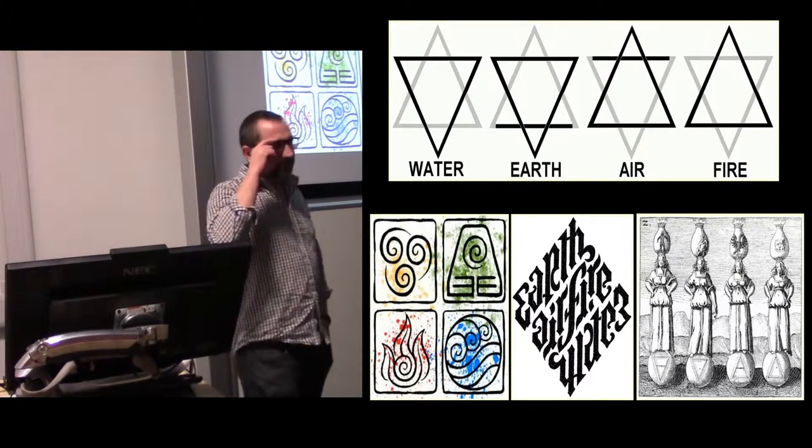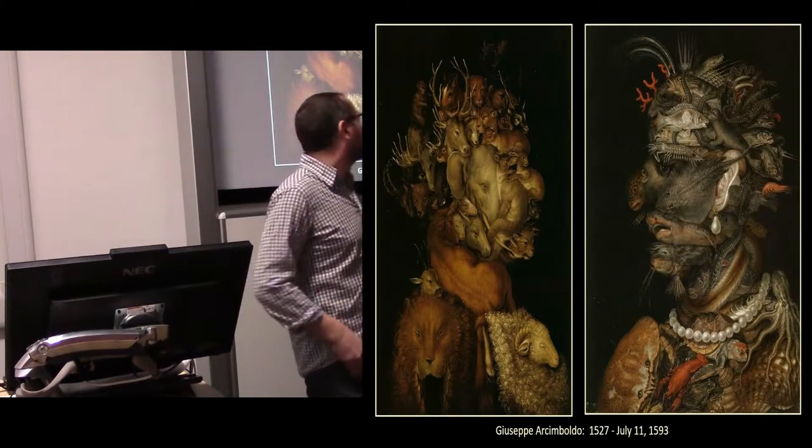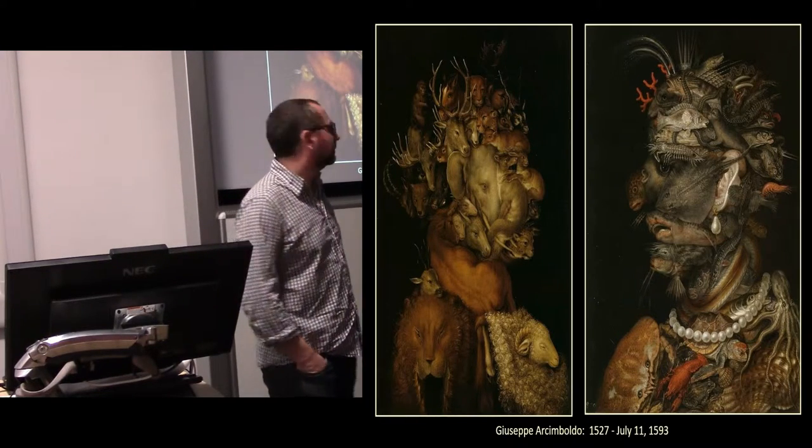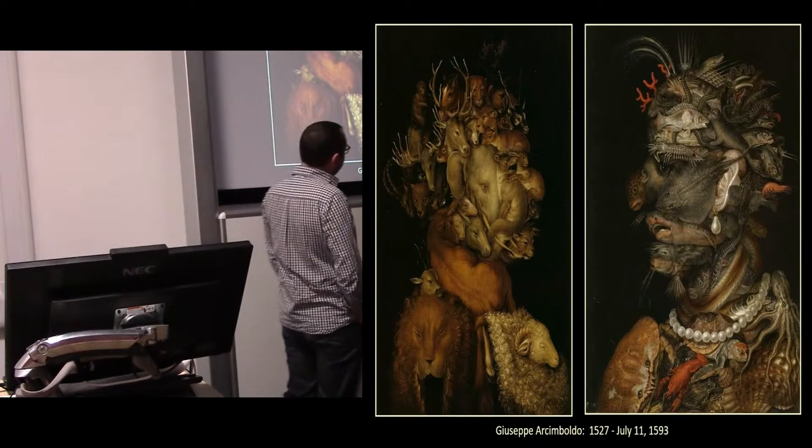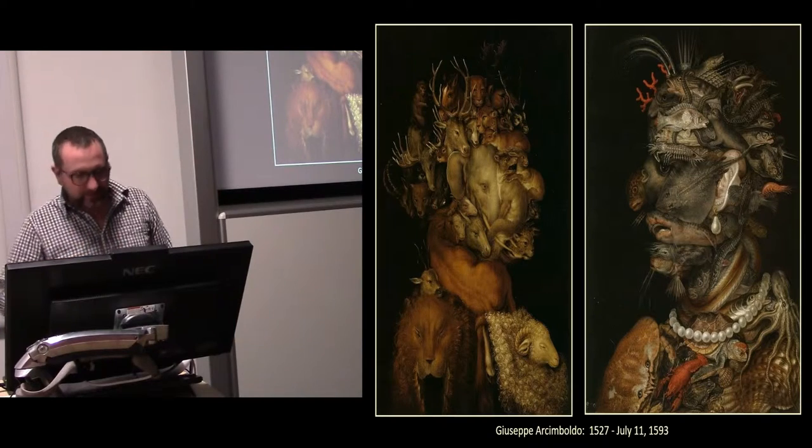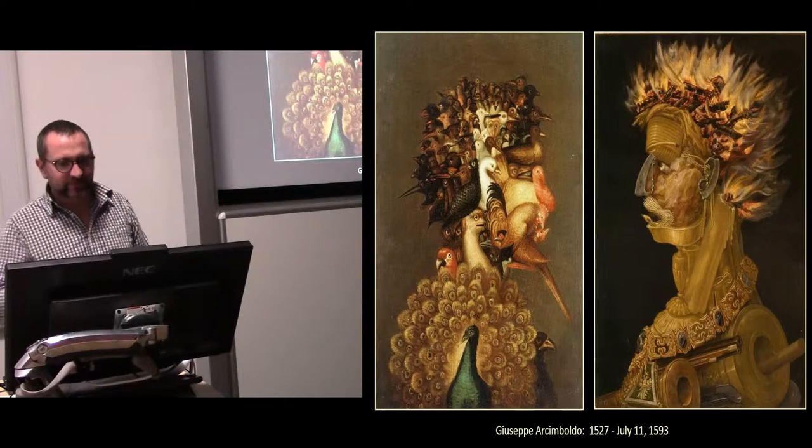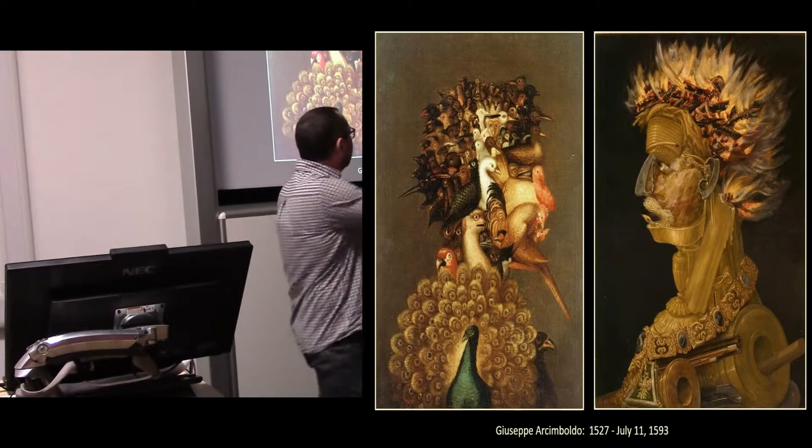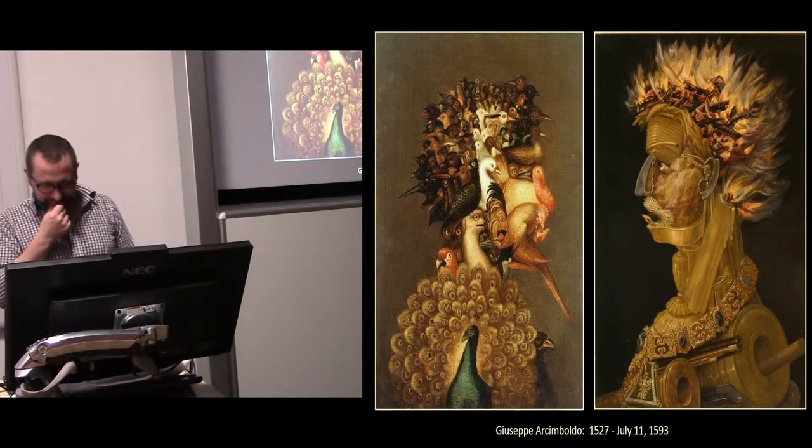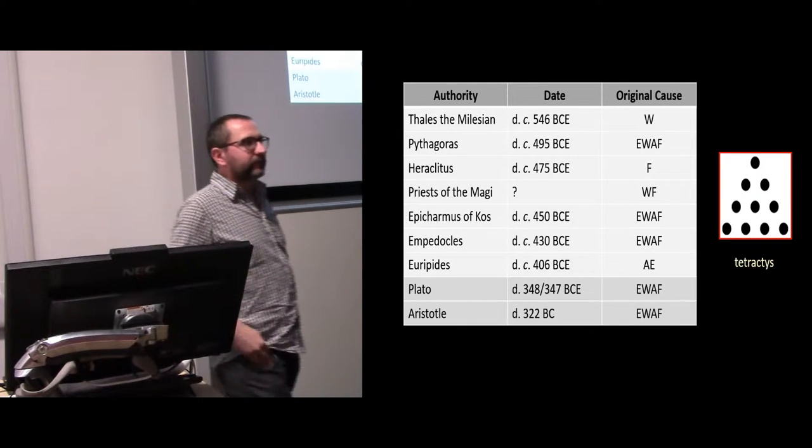Representations of the elements come in all sorts of shapes and forms. These happen to be my favorite, a series that's sort of put together. There are several versions of this series of four elements by the artist Archimboldo, 16th century artist. Here you're seeing earth represented by mammals, water represented by fish, the birds representing air and fire. Fantastic representations. Well, however you've encountered them, they've been around for some time.